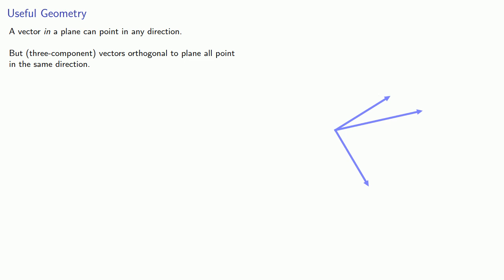Now when you're talking about geometric objects, it helps to talk a little bit about geometry. So we've been looking at these things from an algebraic perspective, writing down equations and solving them, but a little geometry is helpful. For example, a vector in a plane can point in any direction. But three component vectors that are orthogonal to a plane all have to point in the same direction or in the opposite direction.